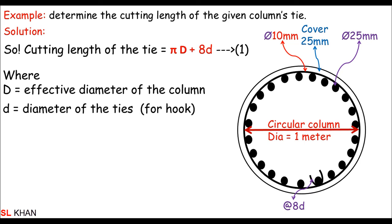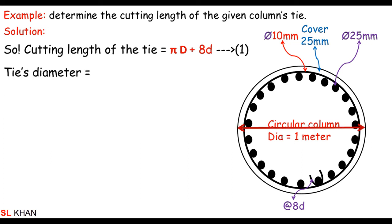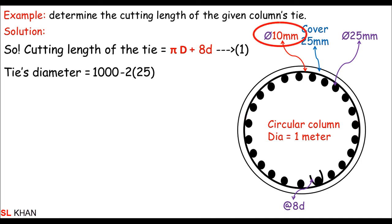First, let's determine the effective diameter of the tie. The effective diameter equals the total column diameter of 1000mm, minus two times the concrete cover (25mm each side), minus the full tie diameter (half on each side, totaling 10mm). So: D = 1000 − 2×25 − 10 = 940mm.